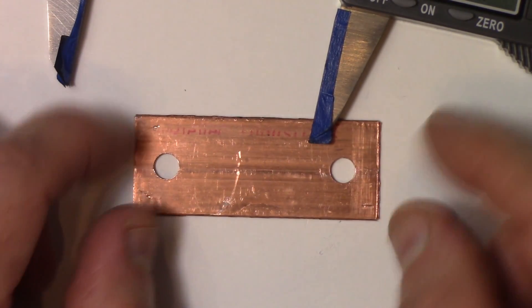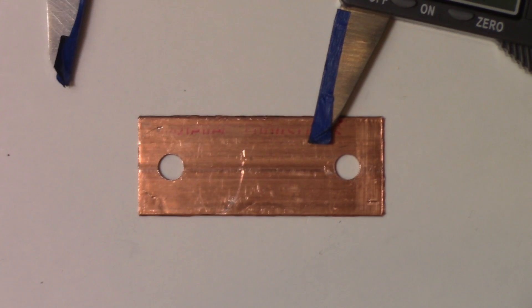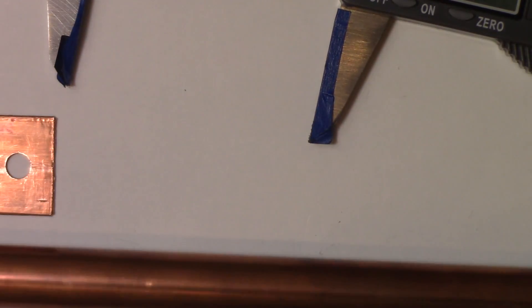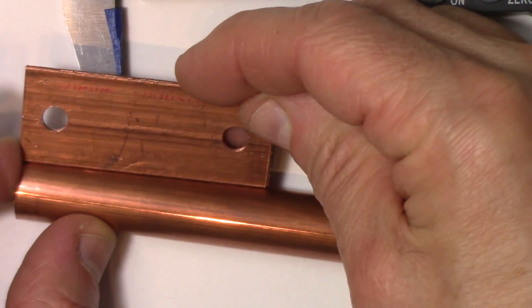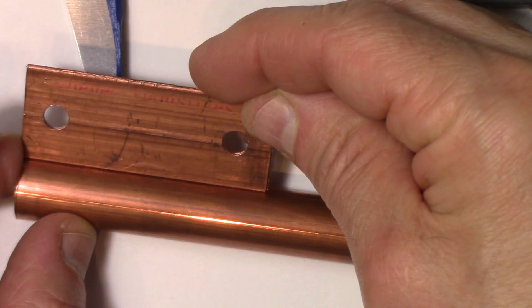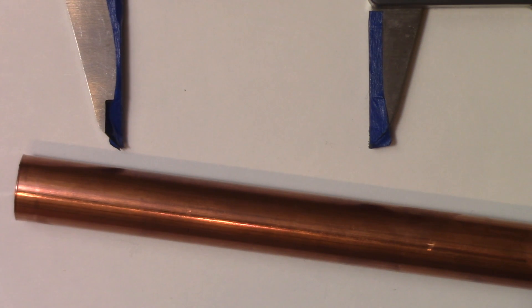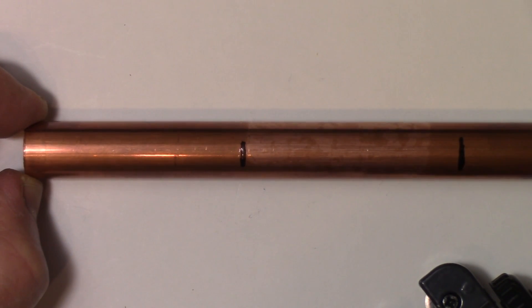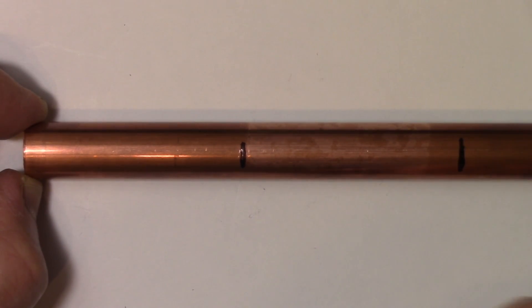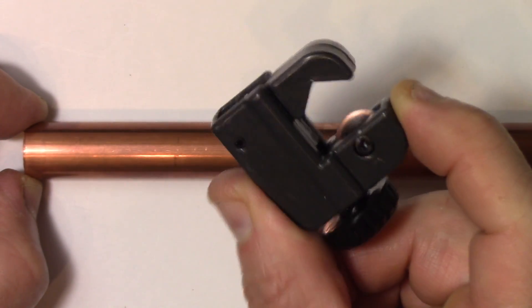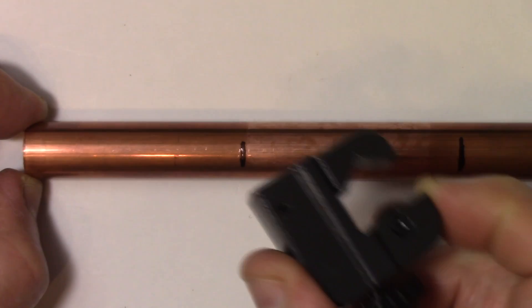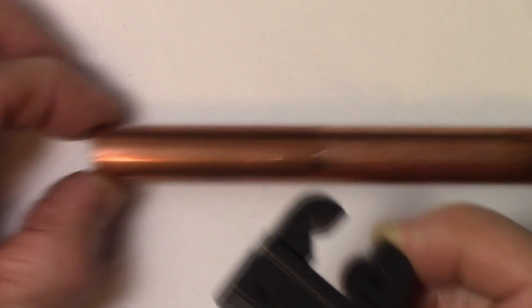So next, what we're going to do is take a piece of copper pipe and mark it. So we've got our copper and we're going to mark it to the size that I have here. I could just use this as a template but I will measure it and then I'm going to cut two pieces here and then I'm going to flatten it out.